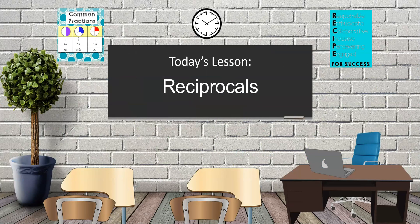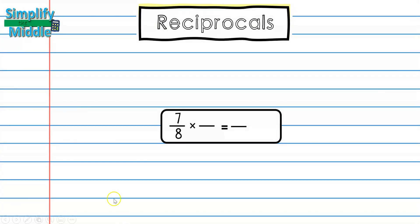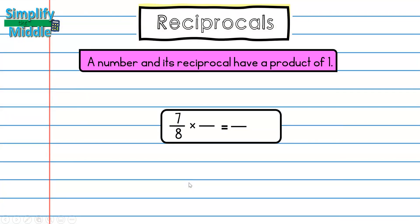Hi and welcome to today's lesson on reciprocals. Here we have 7/8, and we are going to find its reciprocal. A number and its reciprocal have a product of 1, so I'm going to be multiplying 7/8 by something that will give me an answer of 1.